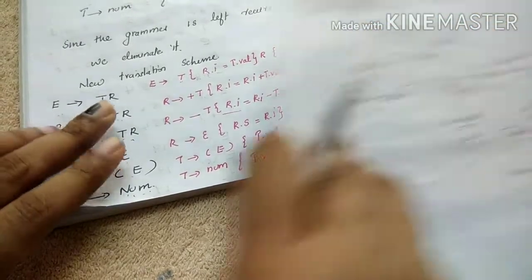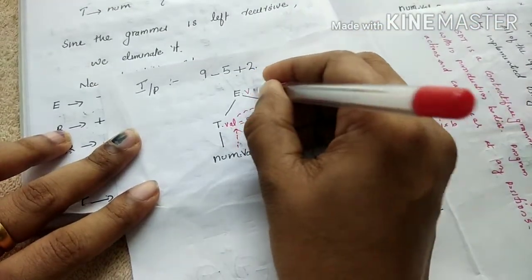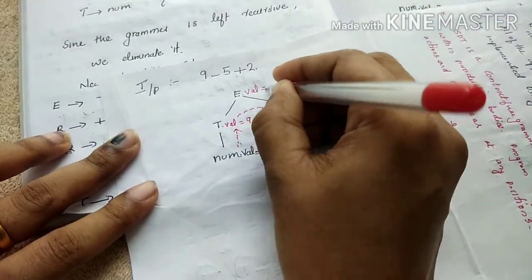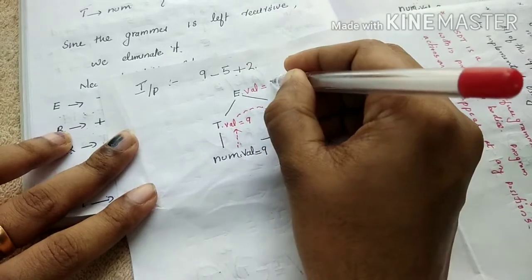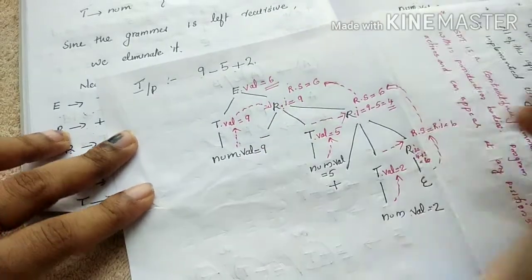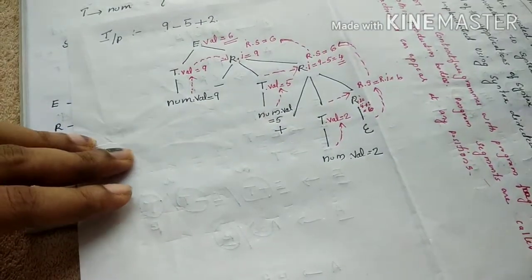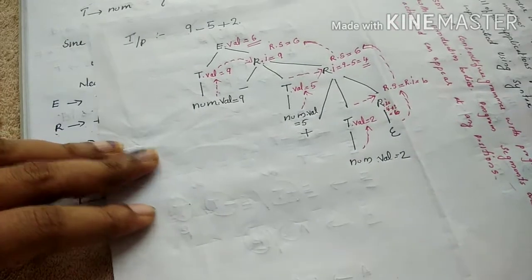So E.val equals 6. This is the final answer. This is the way of top-down translation.